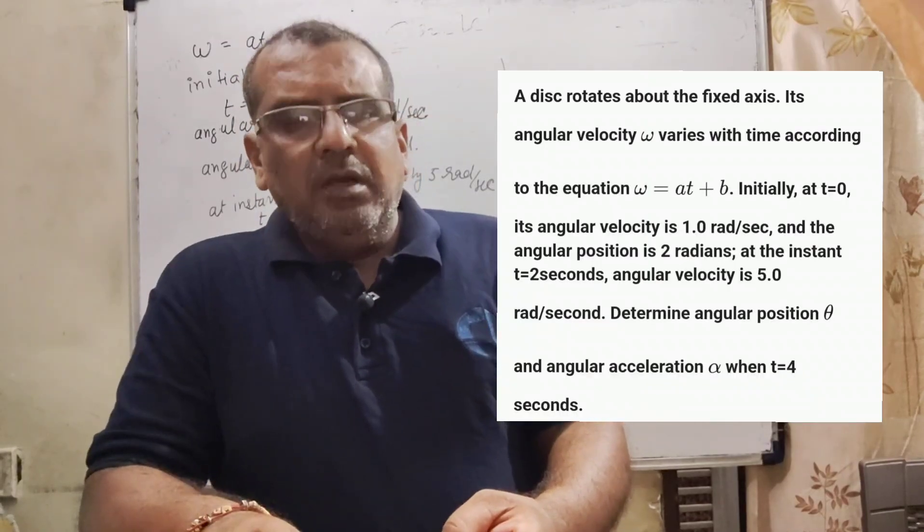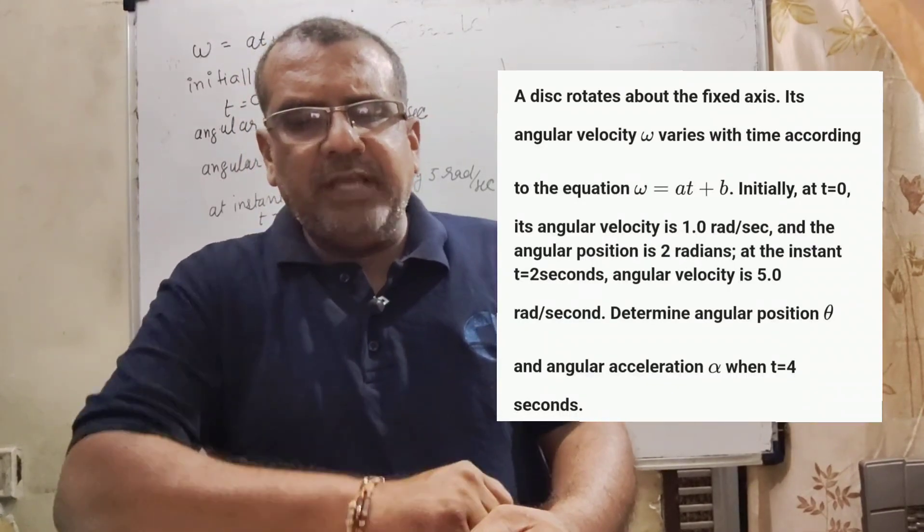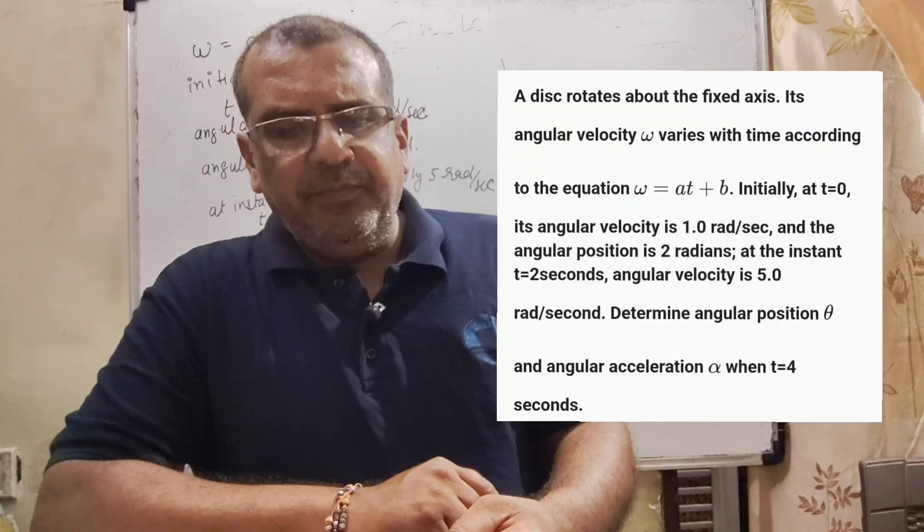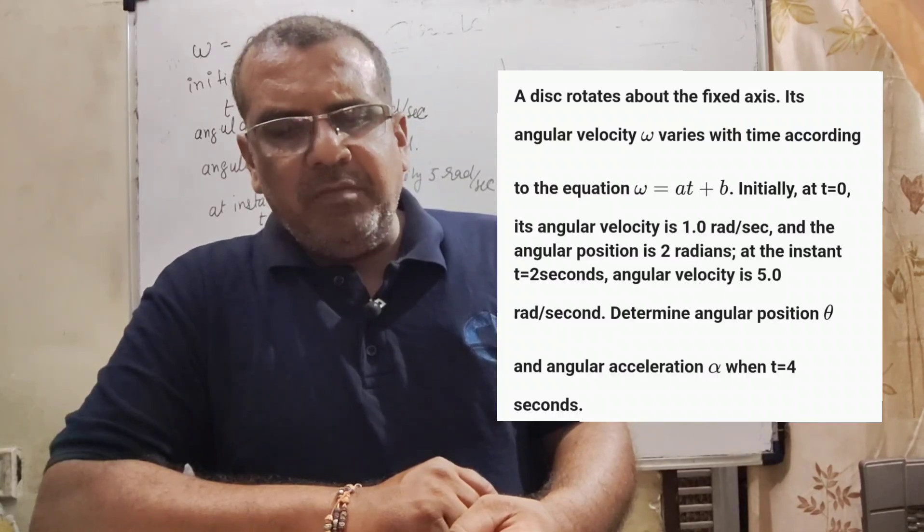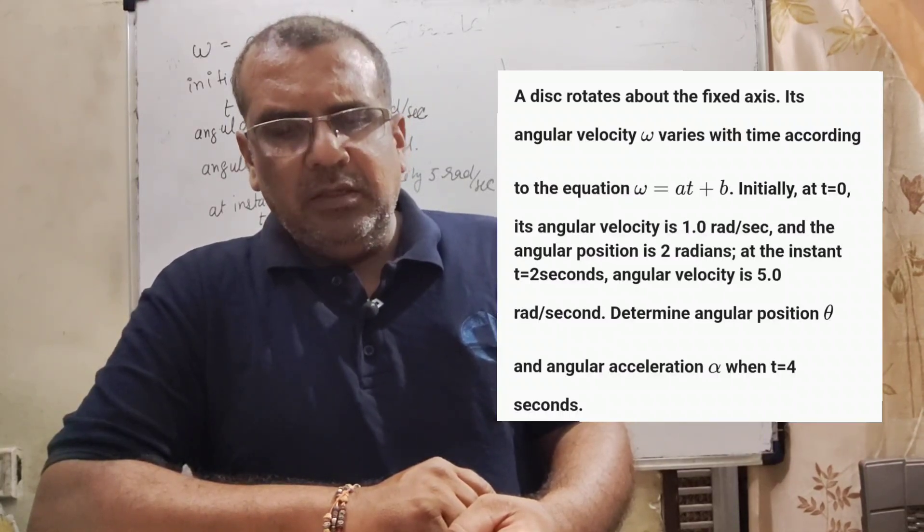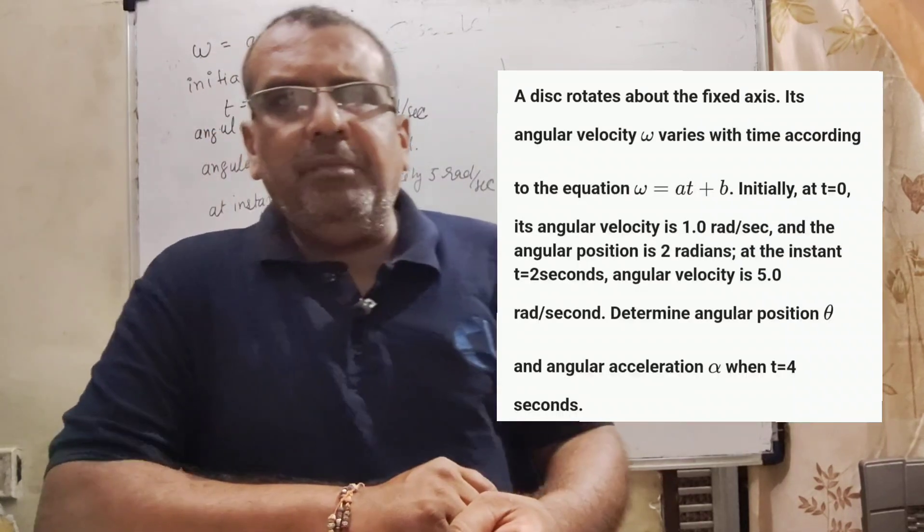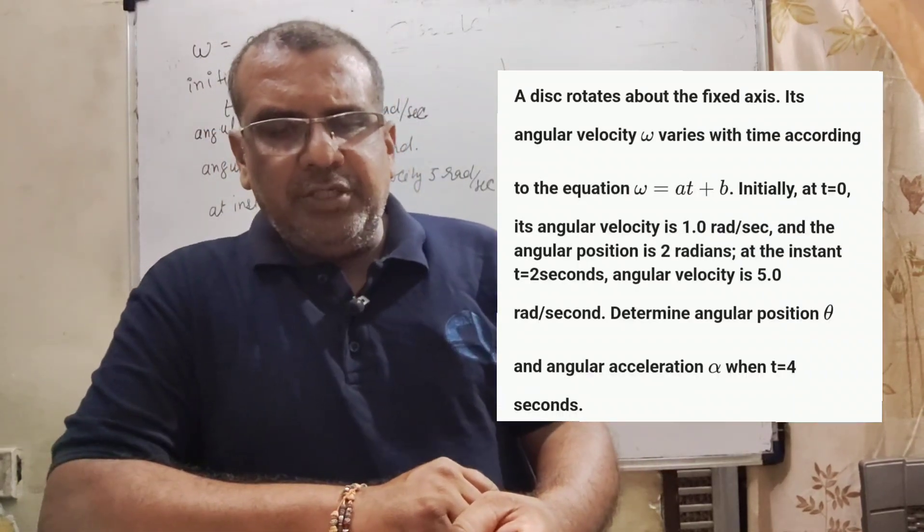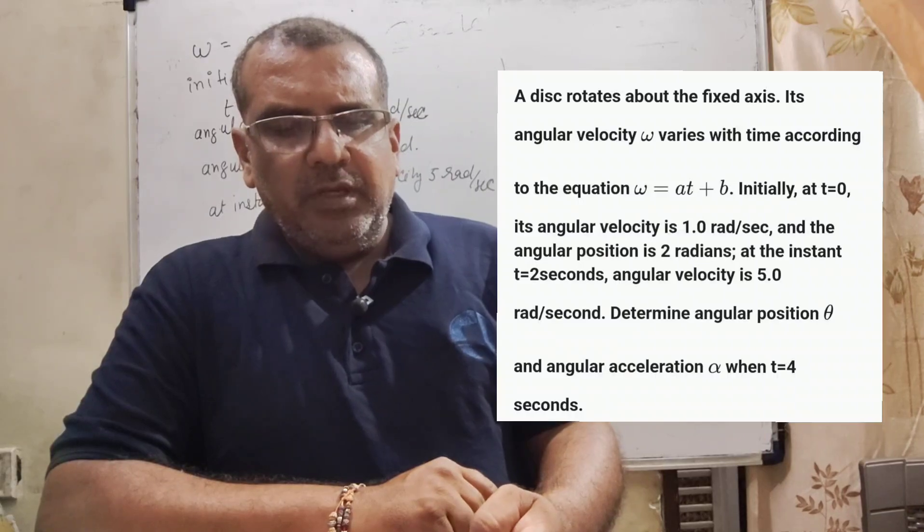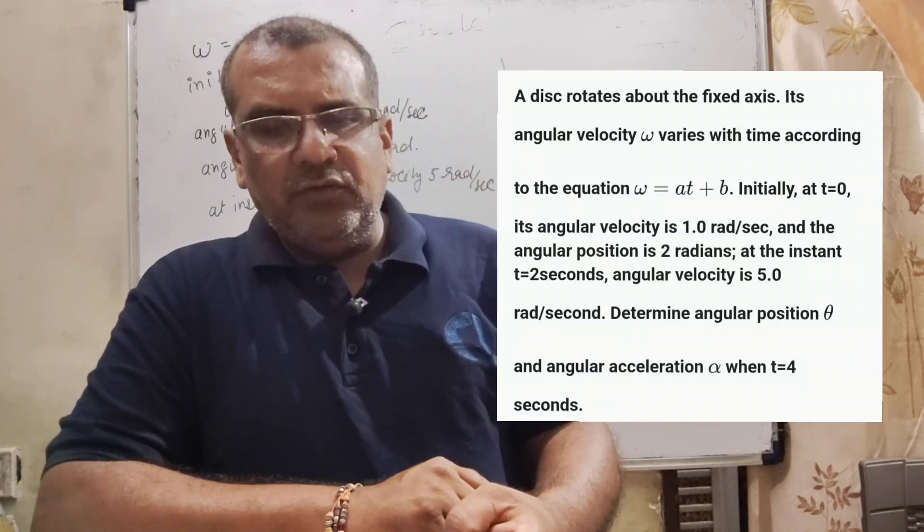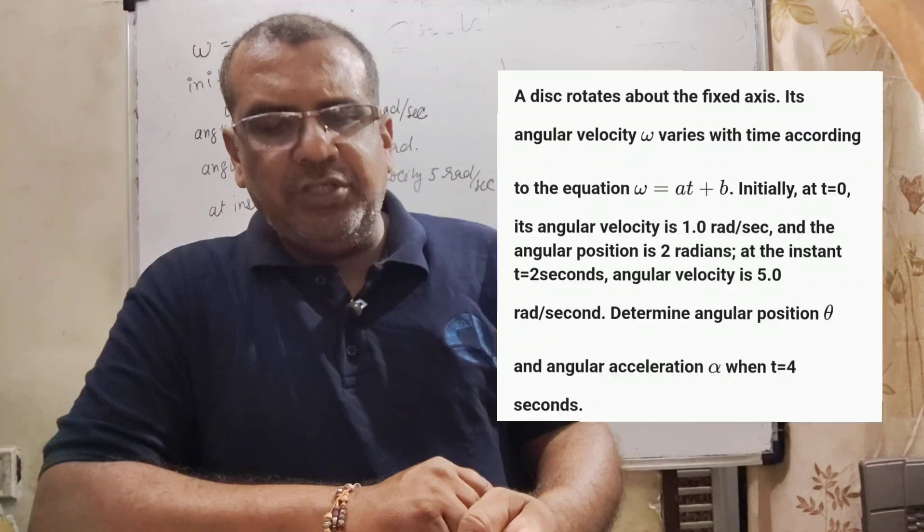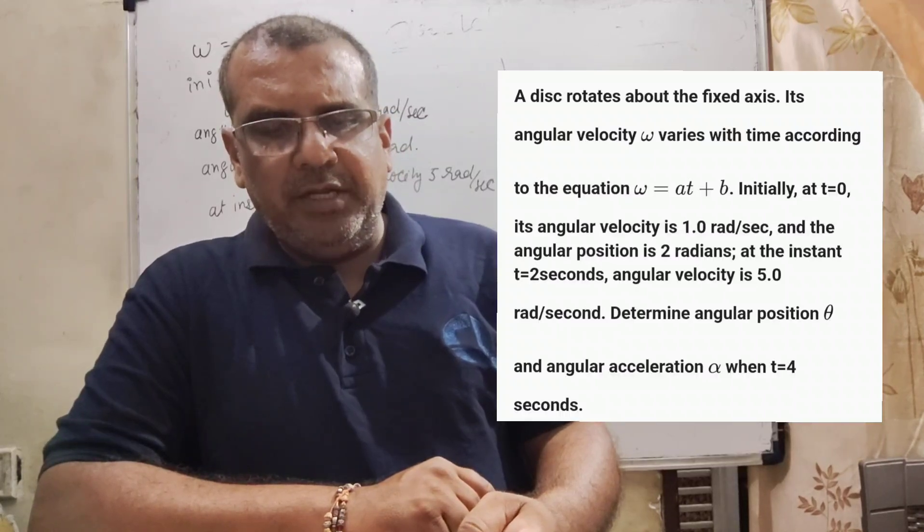Now here is the question. A disk rotates about the fixed axis, its angular velocity omega varies with time according to the equation omega is equal to a t plus b. Here a and b are constants. Initially at t equal to 0, its angular velocity is 1 radian per second and the angular position is 2 radian.